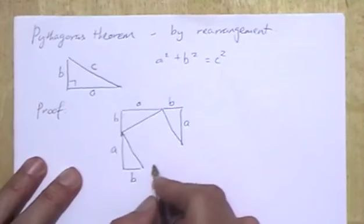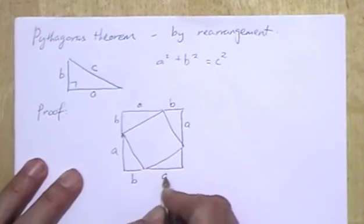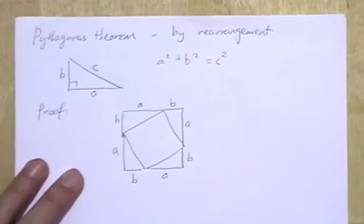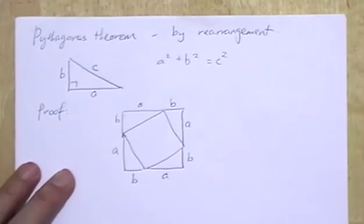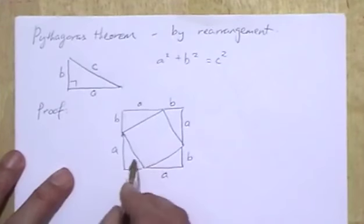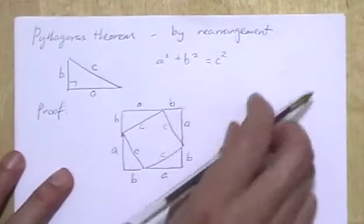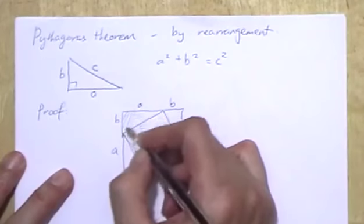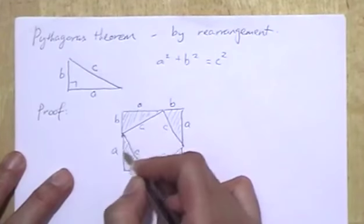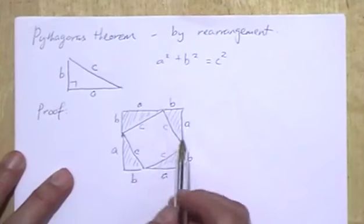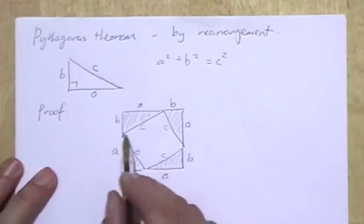I'll take another one and put it here with the longer side A along the B and side B down here. And finally, I'll take the last piece and put it down there. My lines are a bit crooked but you can see that the outer sides form a big square, and the inner sides here are C. So these are the sides C. Let me shade these areas — these are the areas of the triangles.